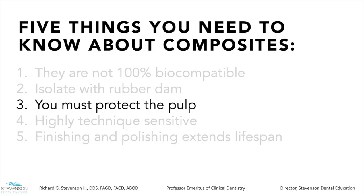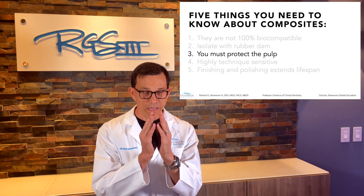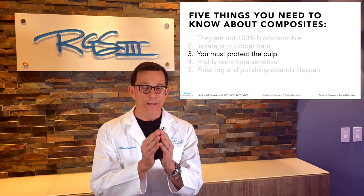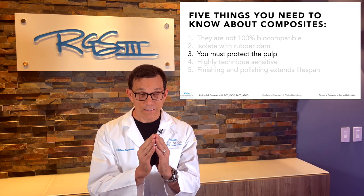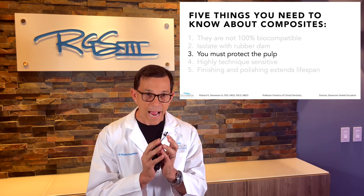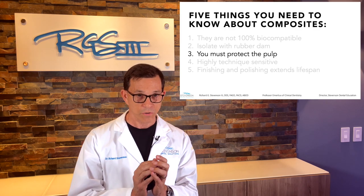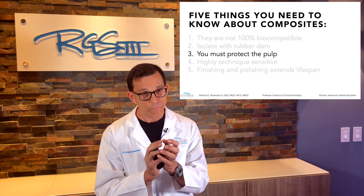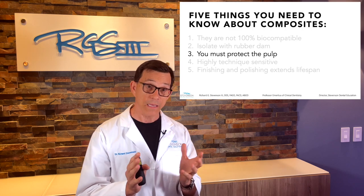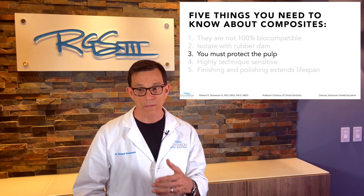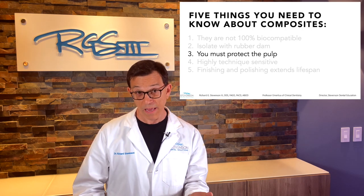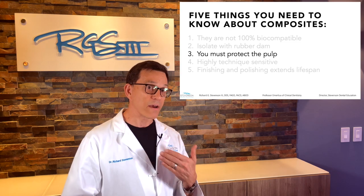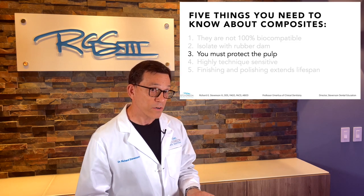Let's look at the third most important factor: you need to protect the pulp. The pulp is the nerve, the artery, the vein, and the lymphatic system located inside the tooth. It has the capability of repairing the tooth over time as long as it's kept healthy. So let's protect the health of the pulp at every turn.